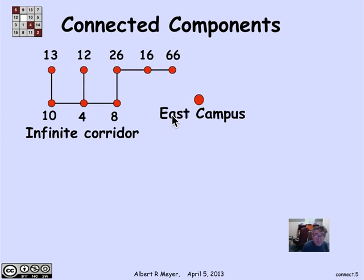East Campus isn't connected to anything, so it's a single isolated vertex. And then there's the Medical Center in E17 and E25, which are a sequence of four buildings that are connected as indicated, but not connected at all to East Campus or the Infinite Corridor.